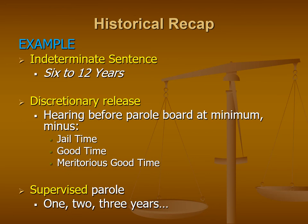So let's imagine we have our inmate. We think six years is the minimum, but we subtract the time spent in jail, the good time earned, and any meritorious credits. Once they have met their new minimum — which may now be somewhere between four to five years after subtracting all those credits — they go before the parole board. The parole board reviews their case, looking at what they did while incarcerated, the facts of the case, whether there were aggravating or mitigating circumstances, the offender's criminal history, and any obvious risks to releasing them back into society.